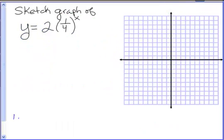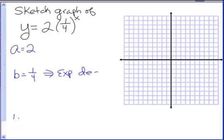In this case we are graphing y equals 2 times 1 fourth to the x. In our model y equals ab to the x, we have a equals 2 and b equals 1 fourth. When b is less than 1 but bigger than 0, this implies that we have exponential decay. The basic shape of exponential decay starts very large and gradually decays, getting closer and closer to 0. We'll get some specific points on the graph to make it more accurate.